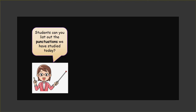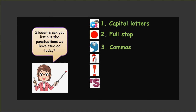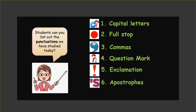Students, can you list out the punctuation marks we studied today? Let's recall. The first one: capital letters. Second: full stop — used at the end of a sentence. Commas — which has three functions. Next: question mark — at the end of a question. Exclamation — used to express strong feelings. And finally, apostrophes.